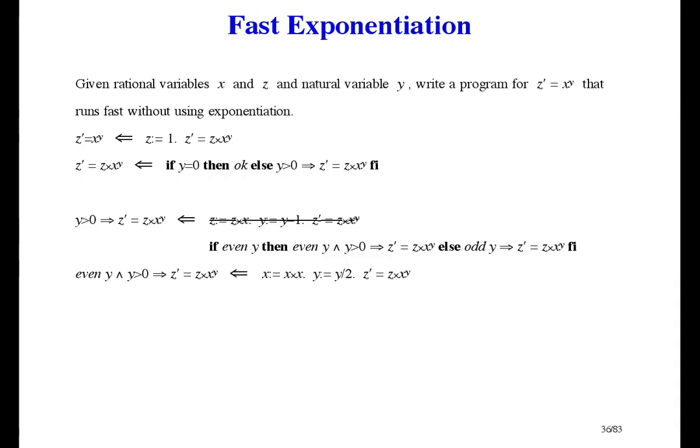What's interesting is that this refinement doesn't change Z at all — it doesn't accumulate any more of the product towards the answer — but it speeds up the computation a lot by making a big decrease in Y. In the odd case I can't think of anything better than what we had before, and it has the same proof as before.